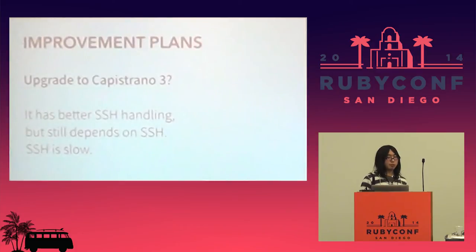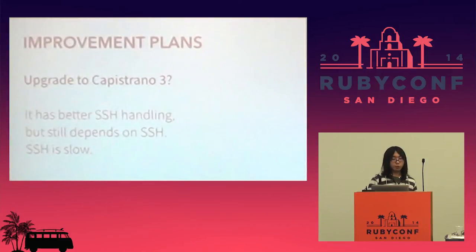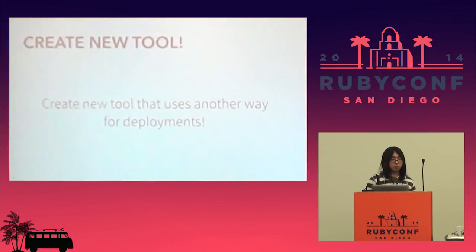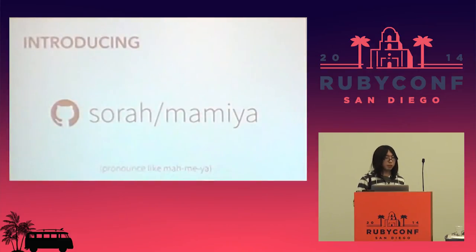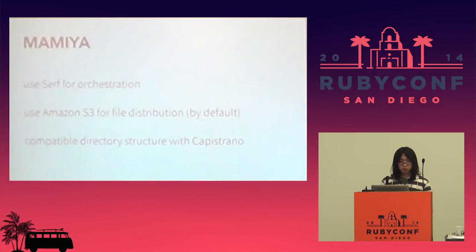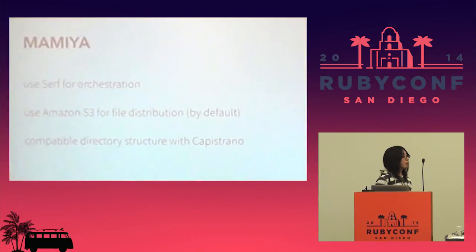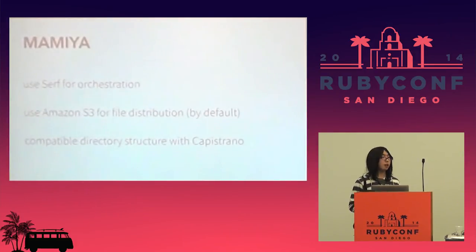I had heard SSH performance had improved in Capistrano 3, but I couldn't think SSH would scale for future server growth, because we are still growing and I expect more servers in the future. So, after discussion with the team, I decided to create a new tool. Introducing Mamiya — it's already on my GitHub. Mamiya uses a tool named Serf to orchestrate servers, and Amazon S3 for file distribution, and also has compatibility with Capistrano 2 and 3 for easier migration.